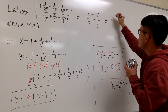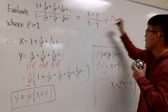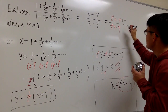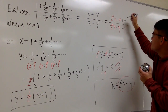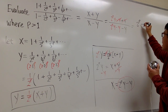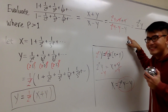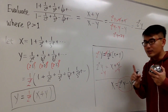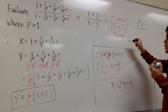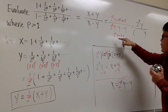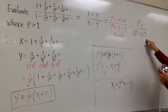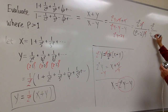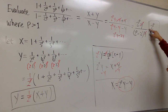Now I'm going to plug that expression for x into the ratio (x+y)/(x−y). The numerator becomes (2^p · y − y) + y, and the denominator becomes (2^p · y − y) − y. On the top, the minus y and plus y cancel, leaving just 2^p · y. On the bottom, that is 2^p · y minus 2y. Both have a factor of y, so we factor it out: y times (2^p − 2). The y cancels, and finally we get 2 to the p over 2 to the p minus 2.